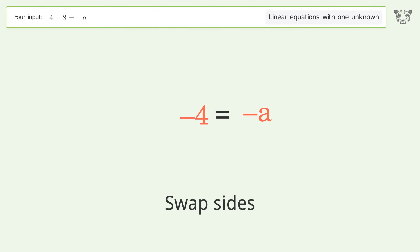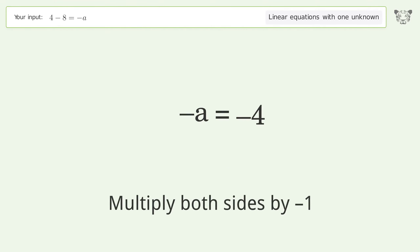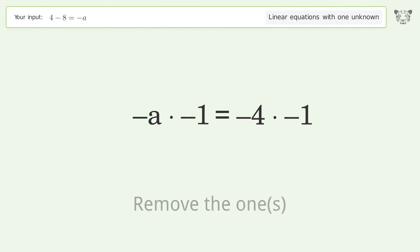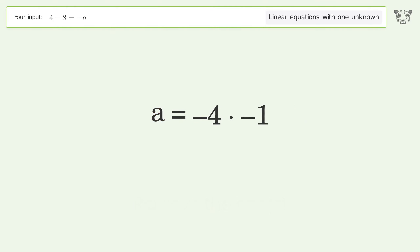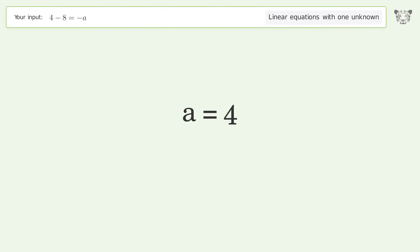Swap sides. Convert the a into a positive number — multiply both sides by negative 1. Remove the ones. Simplify the arithmetic. And so the final result is a equals 4.